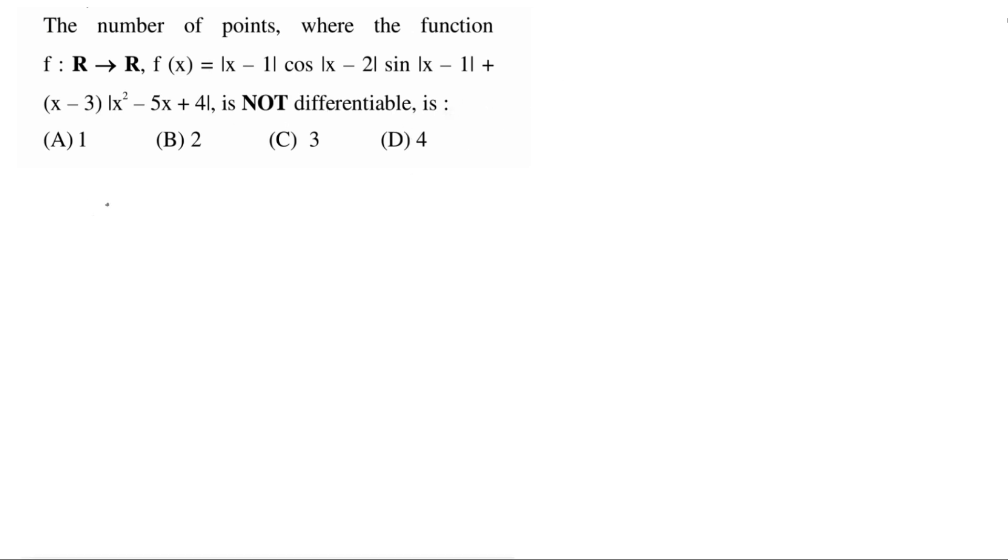That is mod of x minus 1 times cos of mod of x minus 2, sin of mod of x minus 1 in the multiplication, plus x minus 3, and the root simplifies to x minus 4 and mod of x minus 1. So further this simplifies to mod of x minus 1.